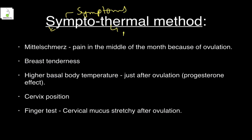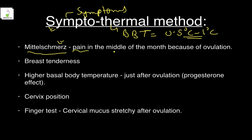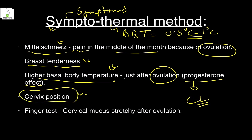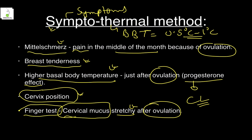The symptothermal method uses symptoms and thermal changes to detect ovulation. The basal body temperature of females rises by 0.5 to 1 degree Celsius at ovulation. Other signs include Mittelschmerz — mid-month pain due to ovulation — breast tenderness, higher basal body temperature due to progesterone from the corpus luteum, change in cervix position, and stretchy cervical mucus after ovulation detectable by the finger test. None of these signs is 100% guaranteed.